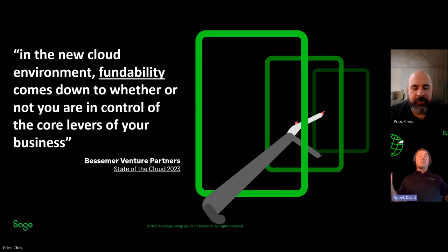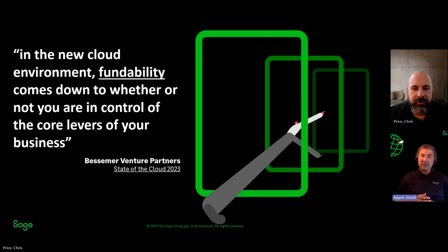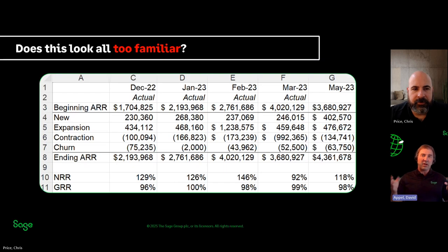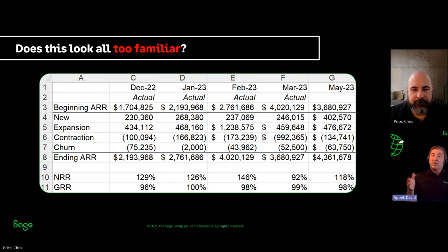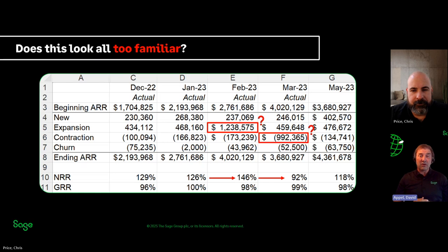Let's talk about the operating environment we're in right now. In the new cloud environment, fundability comes down to whether or not you're in control of the core levers of your business. You need this, and if you don't do it, you're really putting yourself at risk. Let's talk about how we all do it today — spreadsheets. The data's in there, it looks good, but then if the information's perhaps inaccurate, the spreadsheet version's old, or it's missing data, you can really put yourself at risk.